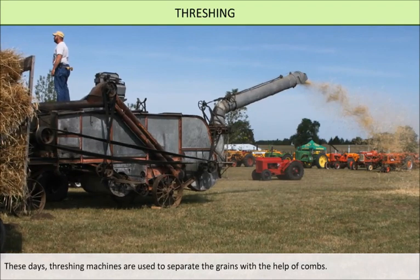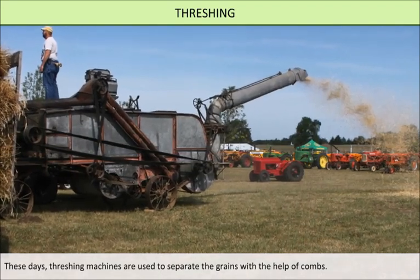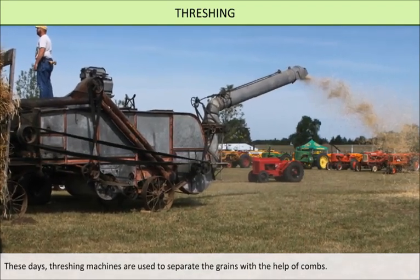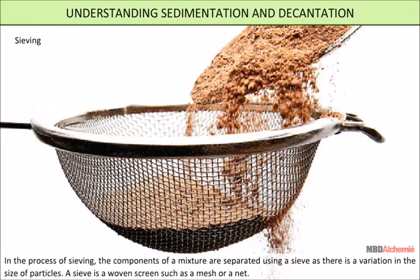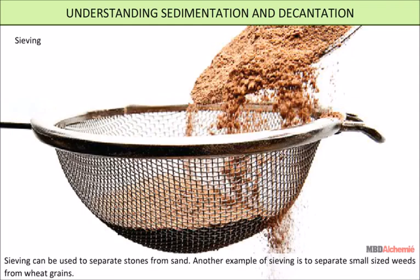In the process of sieving, the components of a mixture are separated using a sieve. There is a variation in the size of particles. A sieve is a woven screen such as a mesh or a net. Sieving can be used to separate stones from sand. Another example of sieving is to separate small-sized weeds from wheat grains.